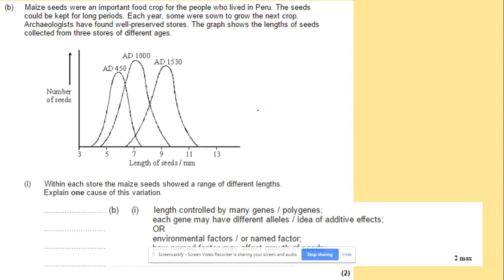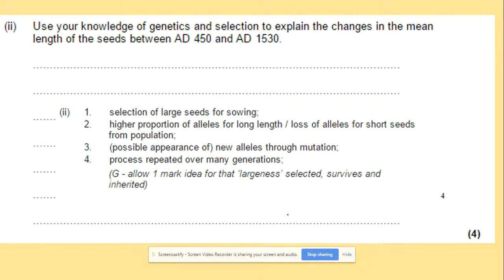Here we have a graph showing the number of seeds against the length of seeds. Within each sample, the seeds show a range of different lengths. Explain one cause of this variation. The cause is that the length could be controlled by many genes, and each gene will have different alleles. Environmental factors also mean that seeds need to be adapted to environmental conditions.